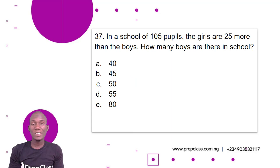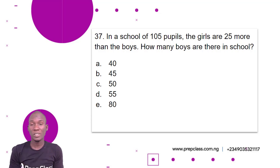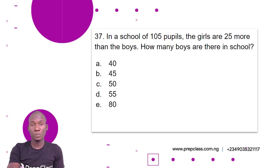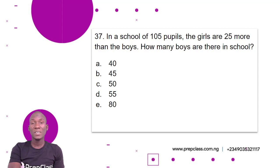Question 37. In a school of 105 pupils, the girls are 25 more than the boys. How many boys are there in the school? A. 40. B. 45. C. 50. D. 55. E. 80.